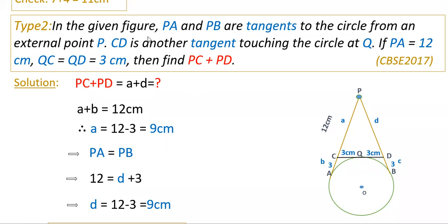Type 2 problem: In the given figure, PA and PB are tangents to the circle from an external point P. CD is another tangent touching the circle at Q. PA is given as 12 centimeters. QC equals QD, and these lengths are 3 centimeters each. You have to find PC + PD. Assume segments as A, B, C, D. Since tangent lengths are equal, the value at Q is 3 on both sides. You need to find A and D values, then add them.